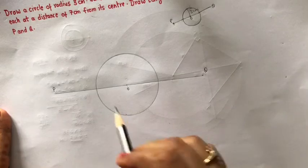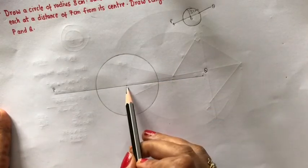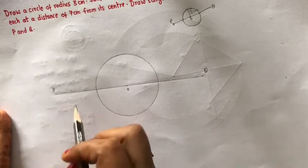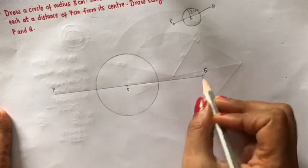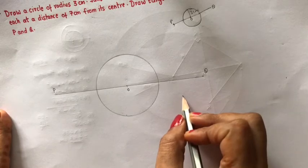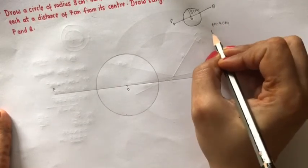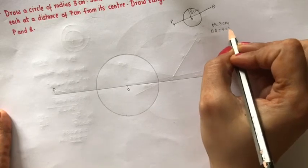So what I have done? Draw a circle of radius 3 cm, extended diameter you have. OP should measure 7 cm and OQ should also measure 7 cm. So OP is 7 cm and OQ is also 7 cm. Next step.